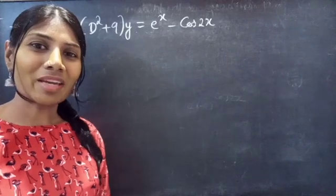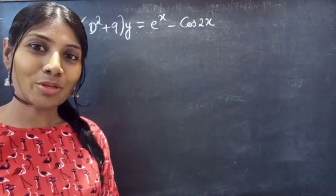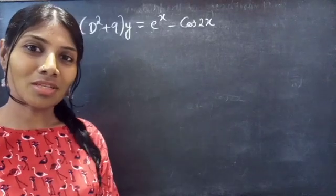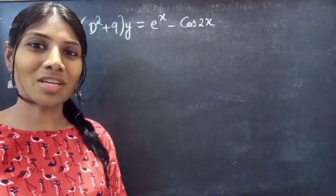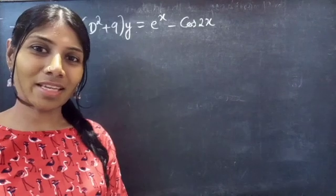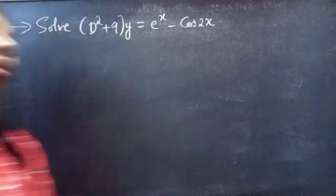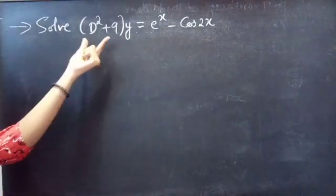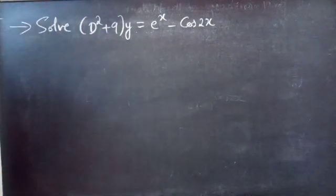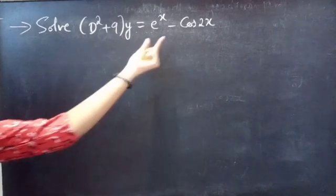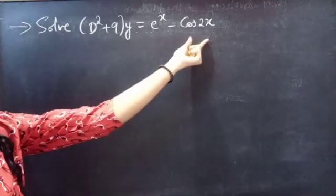Hello everyone, this is Zia Kalpana here. In this video, we are going to solve a differential equation from higher order linear differential equations. Problem: Solve (D² + 9)y = e^x − cos 2x.